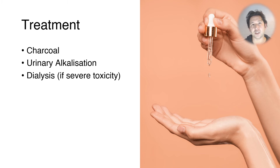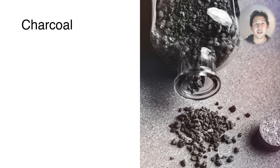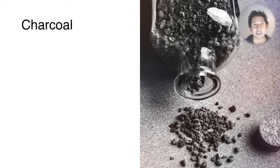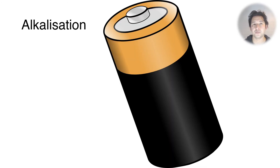The treatment consists of charcoal, urinary alkalization, and maybe dialysis if we're in severe toxicity. Let's talk about activated charcoal first. This can be given any time up to six hours after an ingestion of aspirin in overdose.